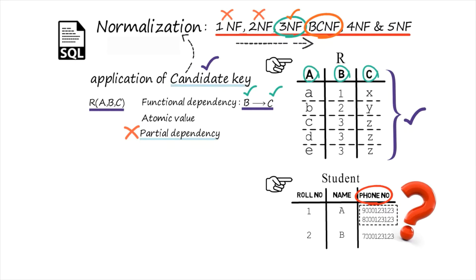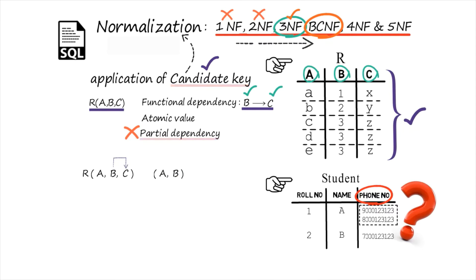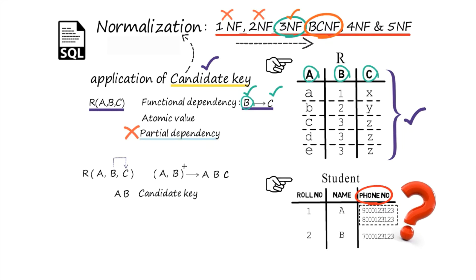Whenever a relation and functional dependencies are given, we draw the edge graph from B to C, then find which attribute has no incoming edge. Here A and B have no incoming edges, so I find the closure of these essential attributes. From AB I get AB by reflexivity, and from B, since B → C, C is reachable. So closure of AB = {A, B, C} — all attributes of R — meaning AB is the candidate key. To find partial dependency, we also need to understand prime and non-prime attributes. Prime attribute means any part of the candidate key. Here A and B are both prime attributes. Whatever attributes are left — in this case C — are non-prime attributes.